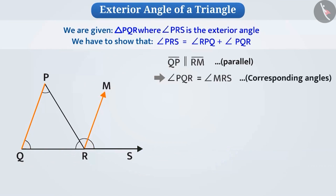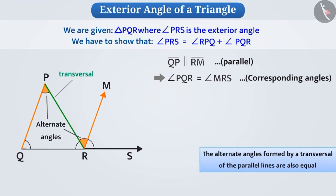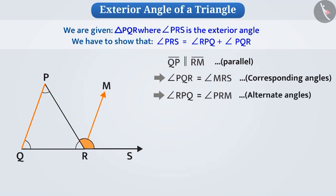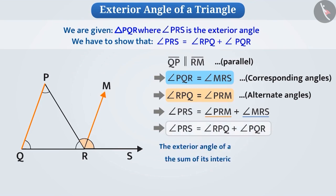Similarly, angle RPQ and angle PRM are alternate angles, and alternate angles formed by a transversal of parallel lines are also equal, so angle RPQ equals angle PRM. The measure of angle PRS is the sum of angle PRM and angle MRS, giving us: angle PRS equals angle PRM plus angle MRS. Replacing angle PRM with angle RPQ and angle MRS with angle PQR, we get angle PRS equals angle RPQ plus angle PQR. This verifies that the exterior angle of a triangle equals the sum of its interior opposite angles.